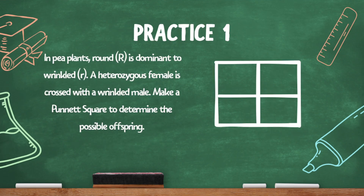Let's do a practice. Pause the video if you want to try it on your own before you see the solution. In pea plants, round (big R) is dominant to wrinkled (little r). A heterozygous female is crossed with a wrinkled male. Make a Punnett square to determine the possible offspring. So I have two parents: a heterozygous female, which will be big R, little r, and a wrinkled male, which will be little r, little r.